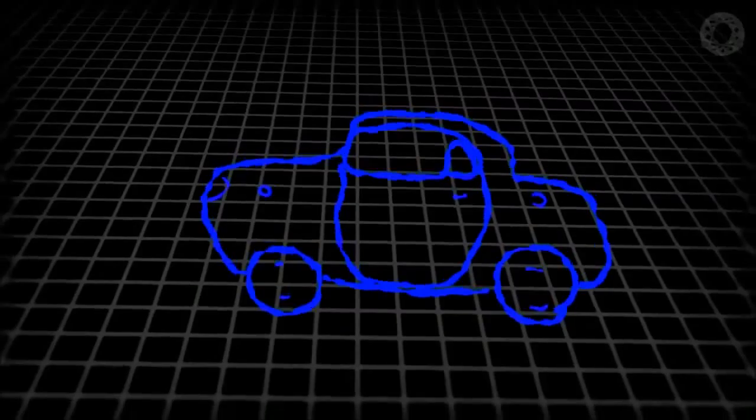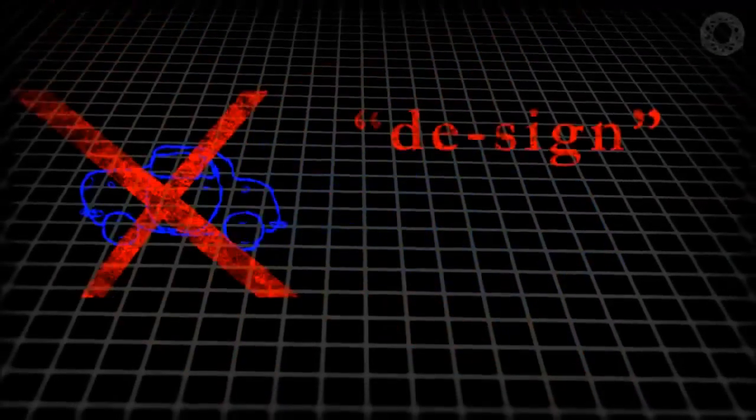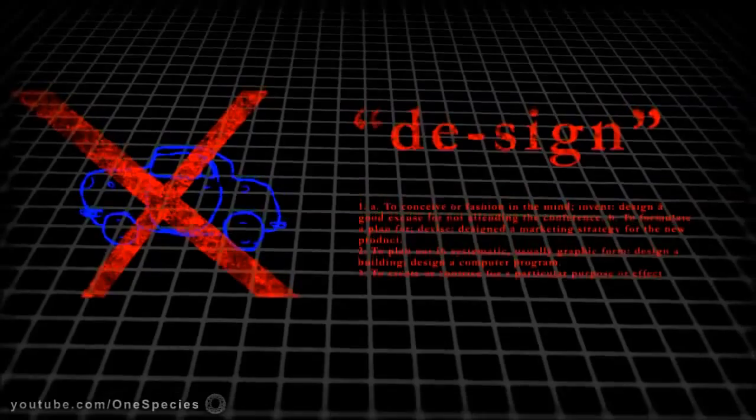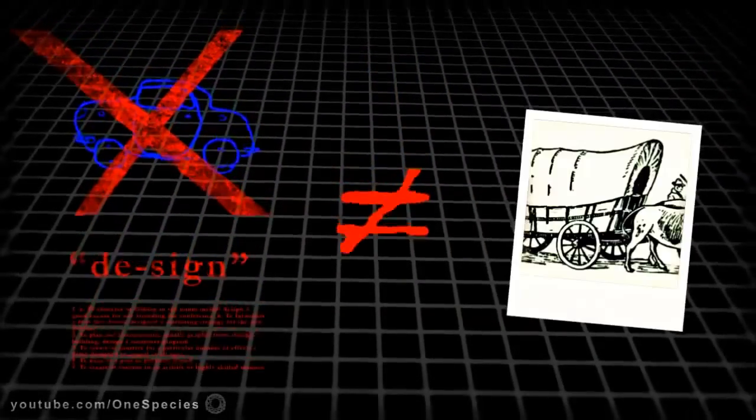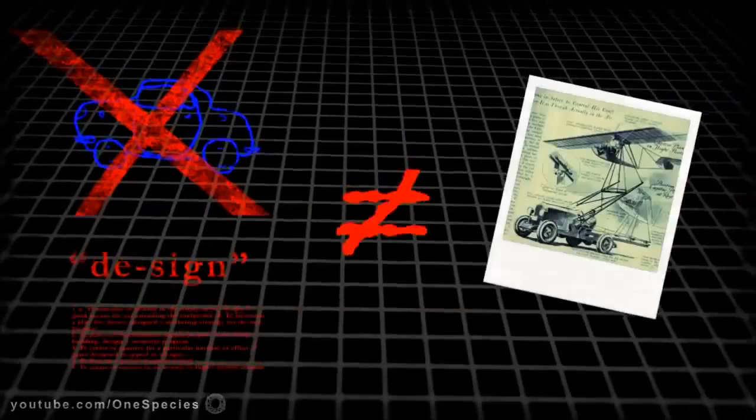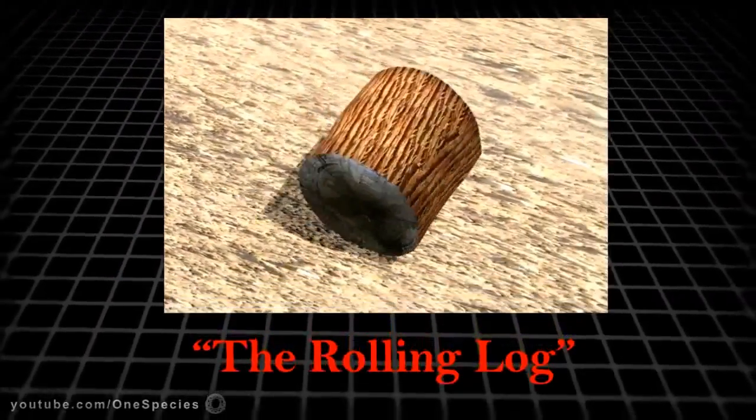Let's use cars. For this we do not see cars as isolated singular objects. Design does not exist. It is a word. What exists are all the contraptions humans have made to move themselves and their goods faster and easier at a longer distance. In the beginning there was the rolling log.